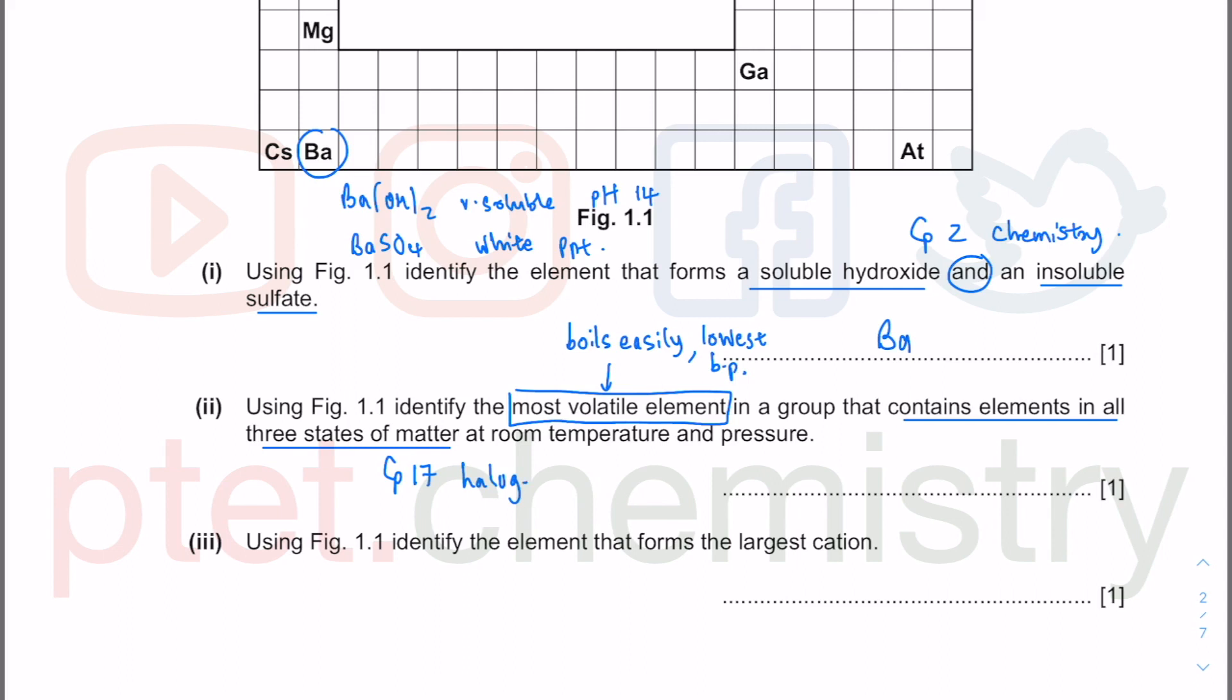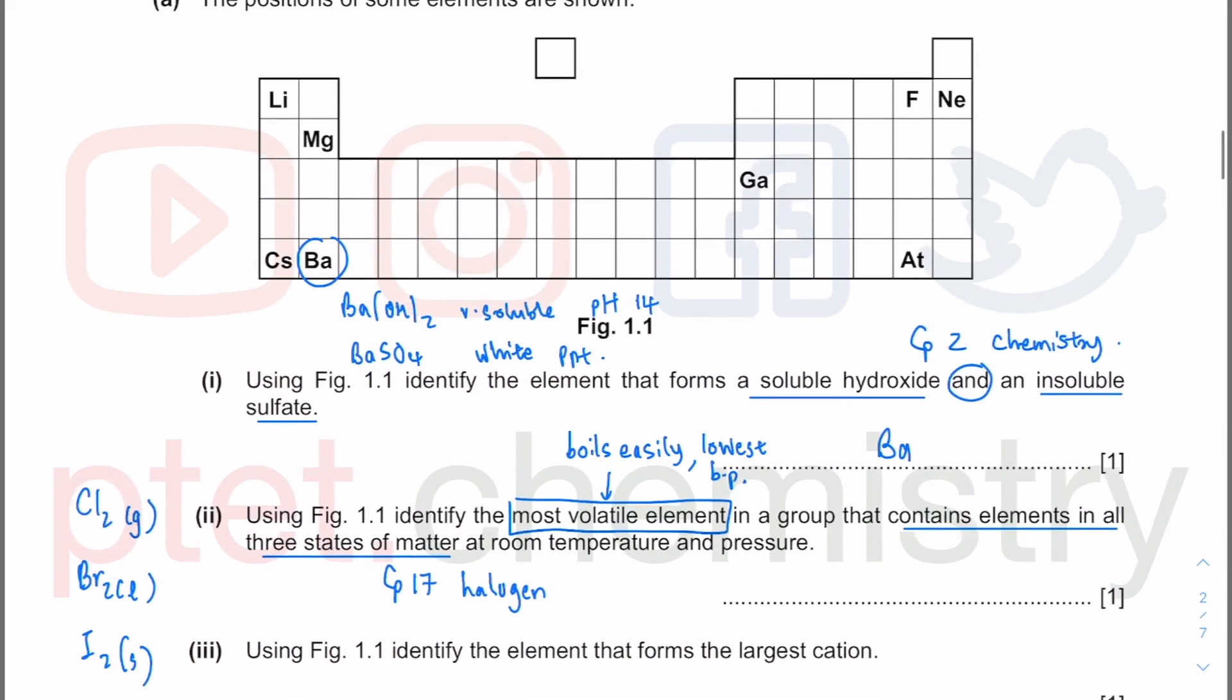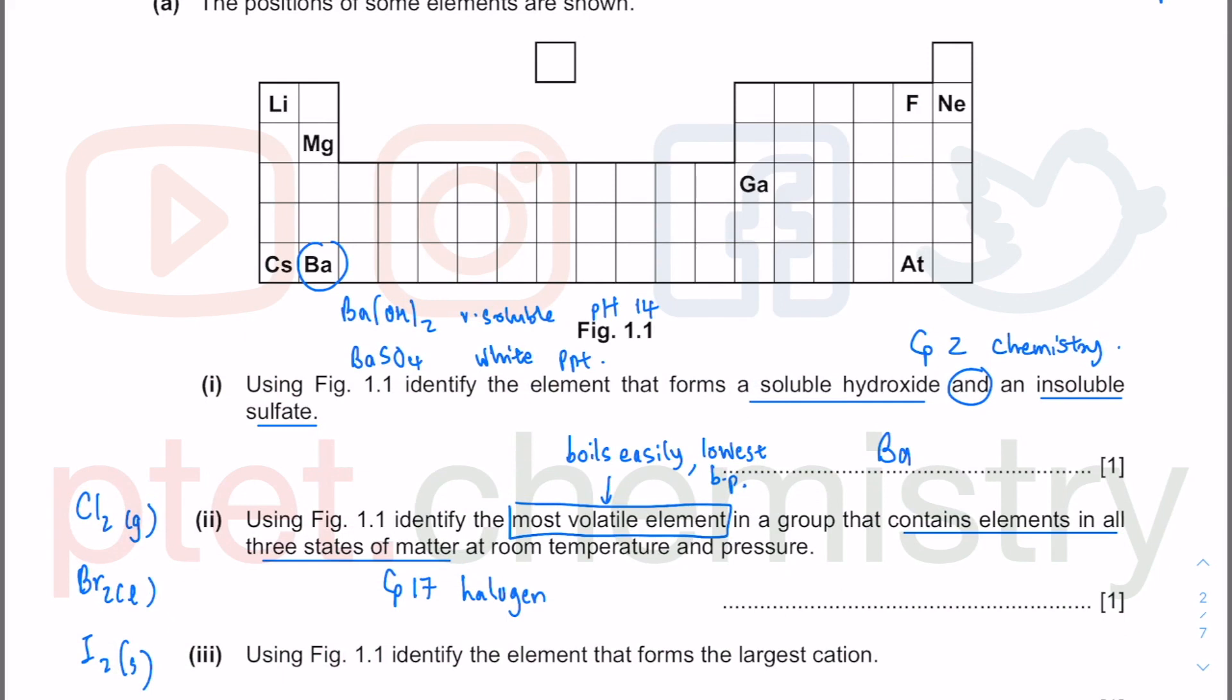it is actually your group 17, this is your halogen. As you know from the case study, chlorine is a pale green gas, bromine is a reddish brown liquid, iodine is a gray black solid. So you know those are the three states of matter. And we're looking at the most volatile element. So in your group 17 halogen, we talk about the lowest boiling point because this thing here, F2 versus At2, this thing will have the largest